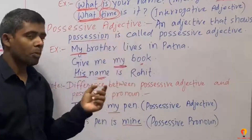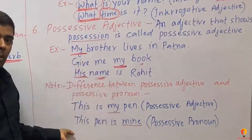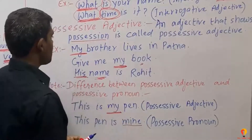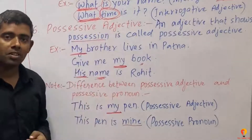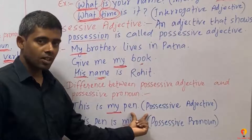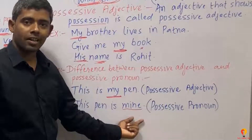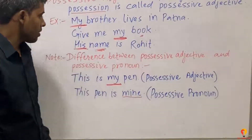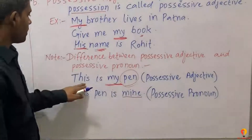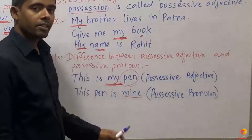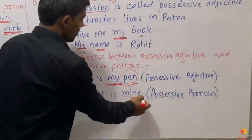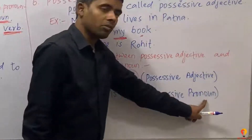Now, let's look at the difference between Possessive Adjective and Possessive Pronoun. A Possessive Adjective will always be followed by a noun. A Possessive Pronoun will not be followed by a noun; instead, a verb will come after it. That is the difference. So 'my book' — 'my' is followed by the noun 'book,' making it a Possessive Adjective, not a Possessive Pronoun.